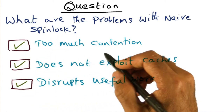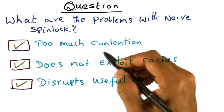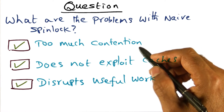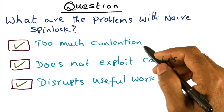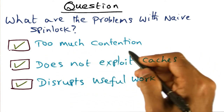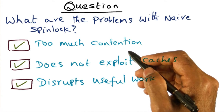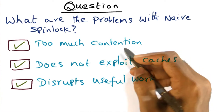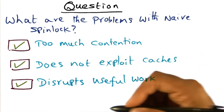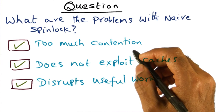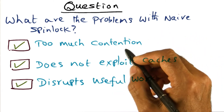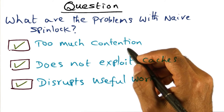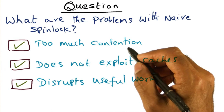If you checked all three of them, you're exactly on the right track. With the naive implementation, there's going to be too much contention for the lock when it is released, because everybody — both T2 and T3 in the previous example — jumped in and started executing the test-and-set instruction trying to acquire the lock. If there are thousands of processors, everybody is executing test-and-set, causing plenty of contention on the network to reach that shared variable. That's the first problem.